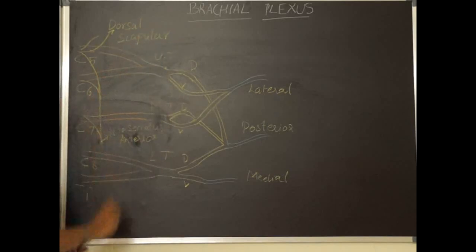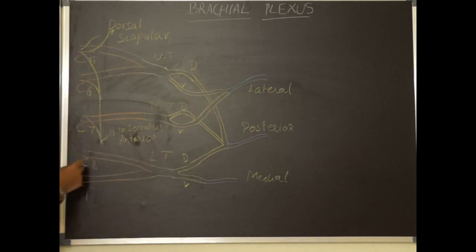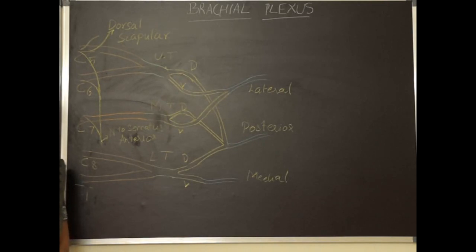The dorsal scapular nerve supplies three muscles: rhomboids major, rhomboids minor, and levator scapulae. Additionally, C5, C6, C7, and C8 give muscular branches supplying the scalene muscles — scalenus anterior, scalenus medius, and scalenus posterior — as well as the longus colli muscle, which is present on the posterior side of the vertebra.